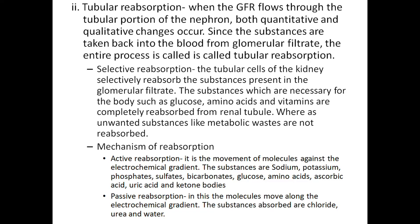Mechanism of reabsorption is of two types: active reabsorption and passive reabsorption. Active reabsorption is the movement of molecules against the electrochemical gradient. The substances include sodium, potassium, phosphate, sulfate, bicarbonate, glucose, amino acid, ascorbic acid, uric acid, and ketone bodies. Passive reabsorption — molecules move along the electrochemical gradient. The substances absorbed are chloride, urea, and water.